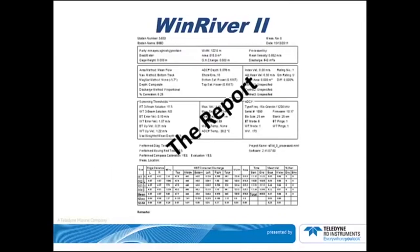There are several different aspects to the report. Some contain information inputted by the operator, such as physical location and who collected the data. Other portions contain information interrogated from the ADCP, such as ADCP type, frequency, and serial number. On the bottom are the discharge values for each individual transect, including the mean of the transects. The river discharge is in cubic meters per second, or can also be displayed in cubic feet per second.